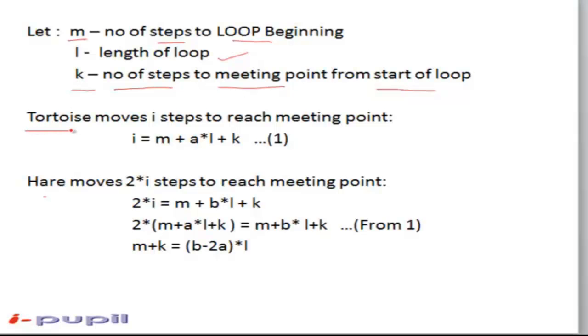Suppose tortoise takes i steps to reach the meeting point. Then i is equal to m, that is the number of steps to the beginning of the loop, plus k, the number of steps to the meeting point from the starting of the loop.